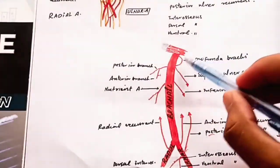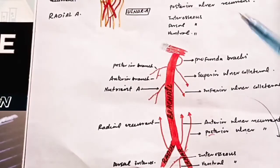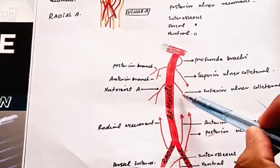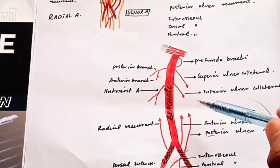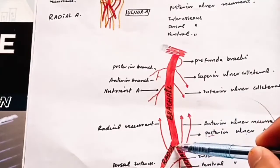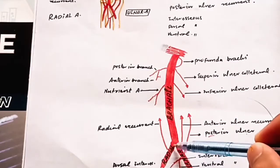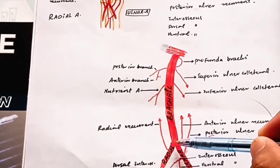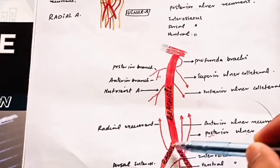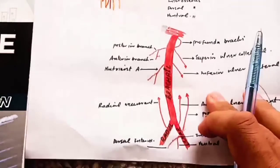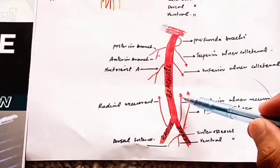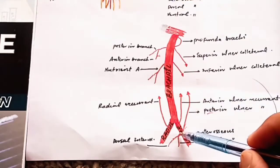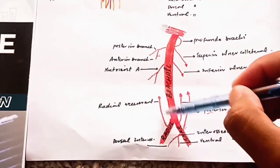Looking at the diagram: the first branch is the profunda brachii artery, further divided into the anterior and posterior branches. The second is the superior ulnar collateral, the third is the inferior ulnar collateral, and the fourth is the nutrient artery. Just at the neck of the radius, it divides into the radial and ulnar arteries. From the ulnar artery, three branches arise: the anterior ulnar recurrent, posterior ulnar recurrent, and the common interosseous artery. From the radial artery, only the radial recurrent artery arises.